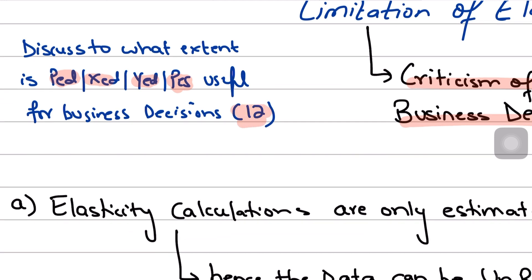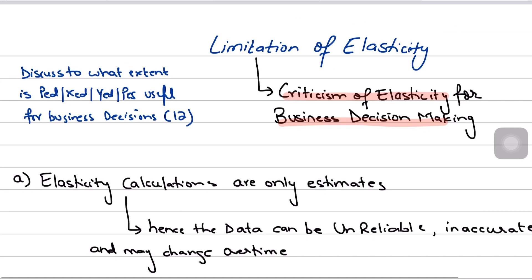A lot of times when we are evaluating such questions, we do tend to give the value that elasticity could provide in useful business decisions. But at the same time, evaluation is a core component of your essays, and four marks are reserved for 12-marker discussed questions with respect to evaluation. Evaluation technically means criticizing the narrative, critiquing the narrative. If your narrative is that elasticity is useful, then you also have to tell the situations in which it could not be useful, or mention the limitations of elasticity, because those limitations provide hindrances to its usefulness - it limits the extent of its usefulness.